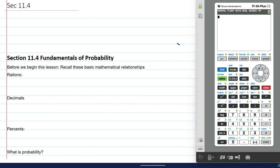Here we are now in class doing section 11.4. It's called Fundamentals of Probability. But before we get there, we have to prep for everything that we've learned because we're going to be utilizing all the information.